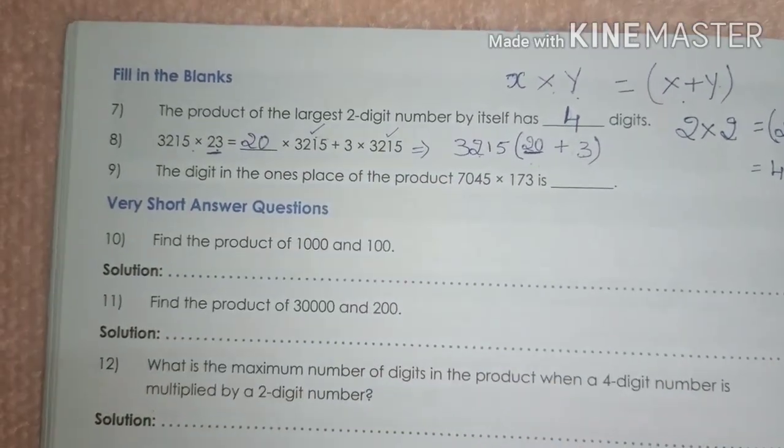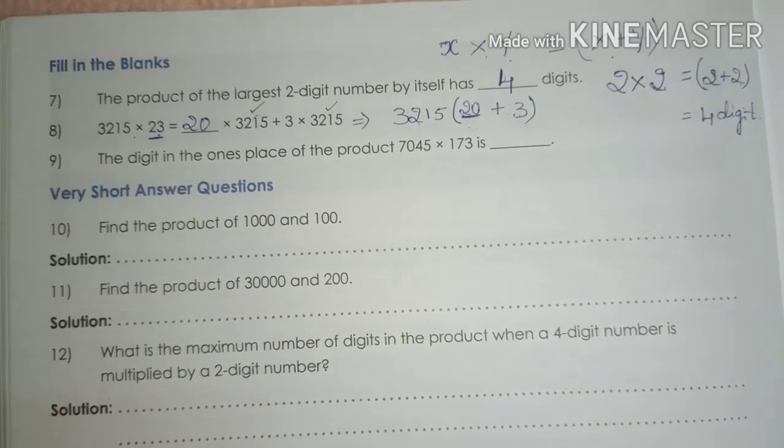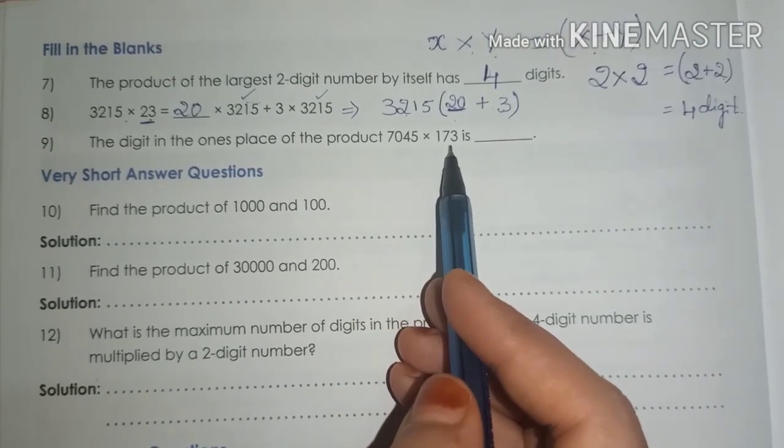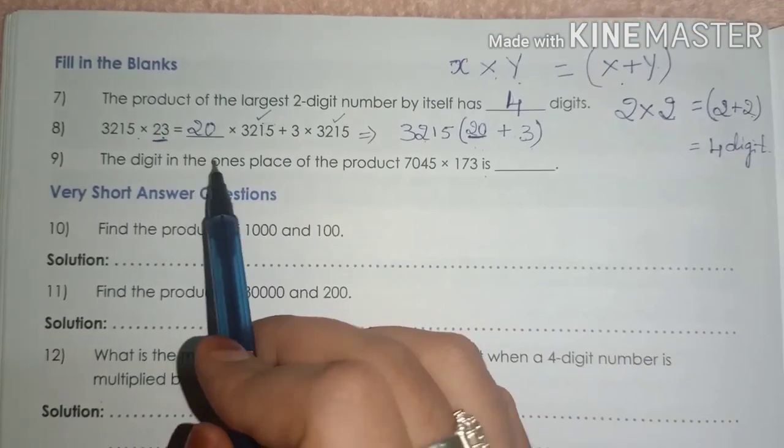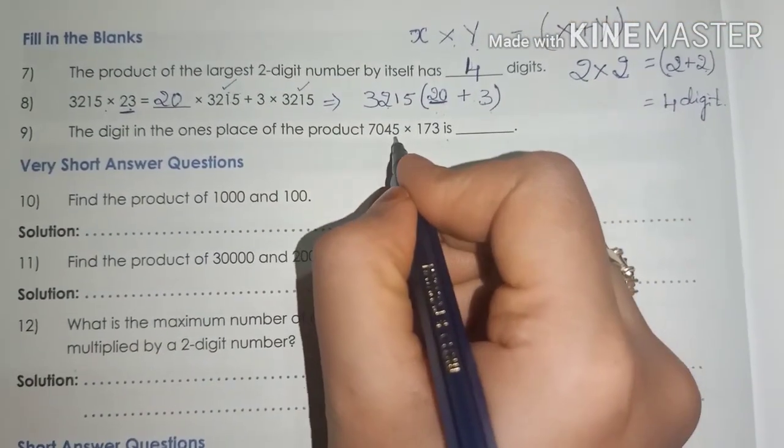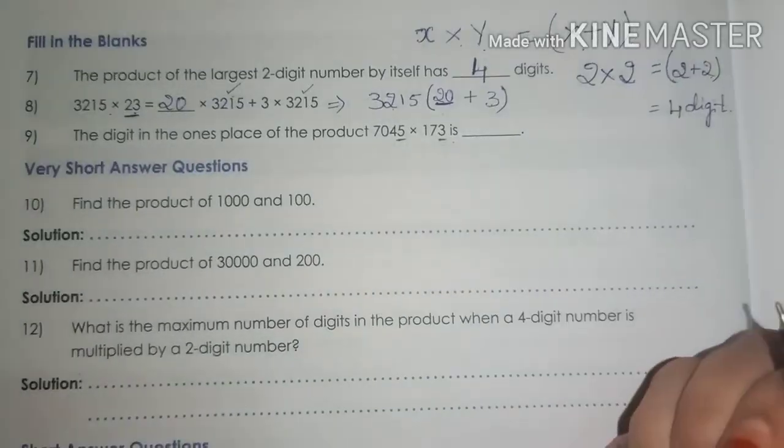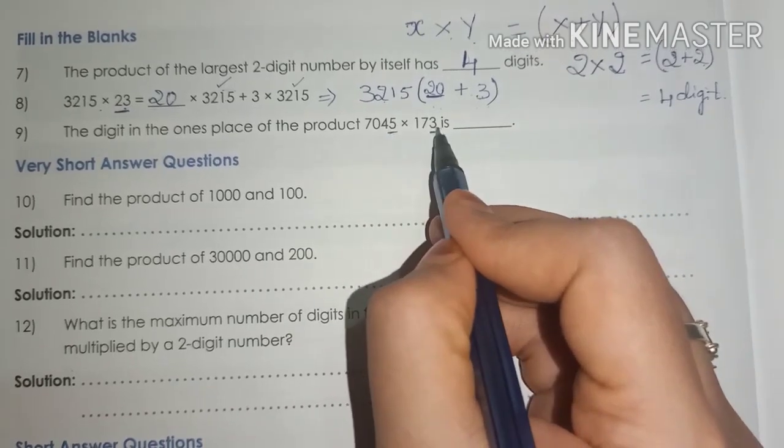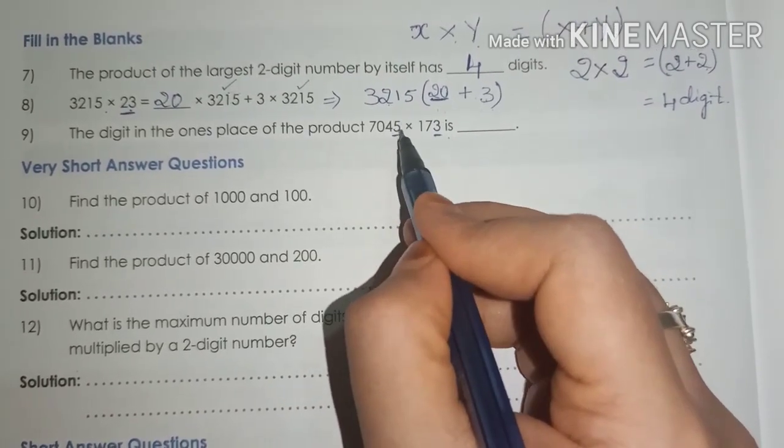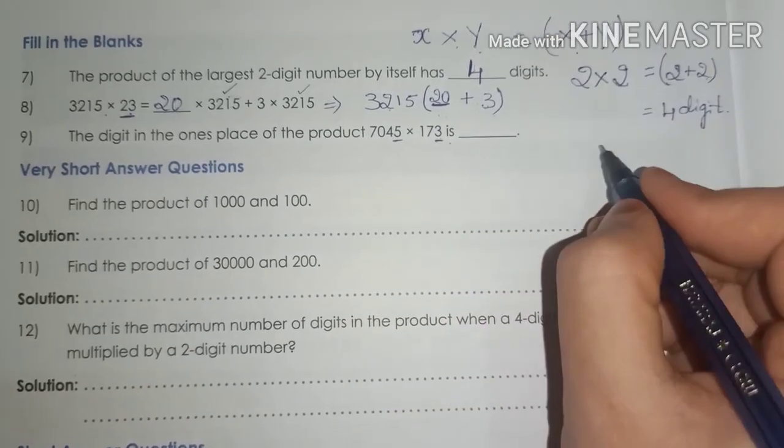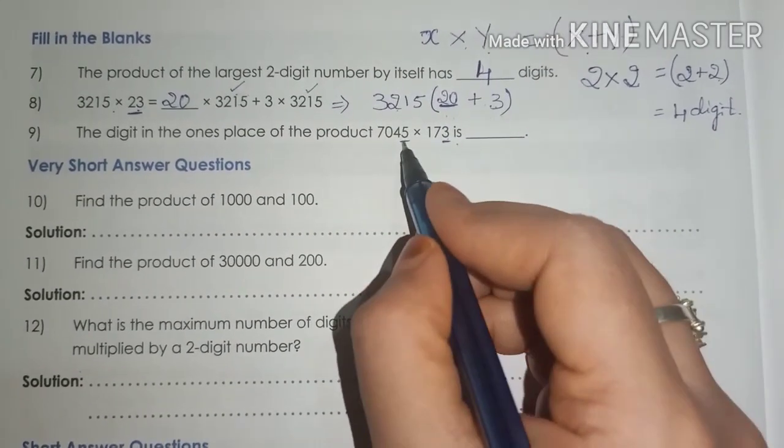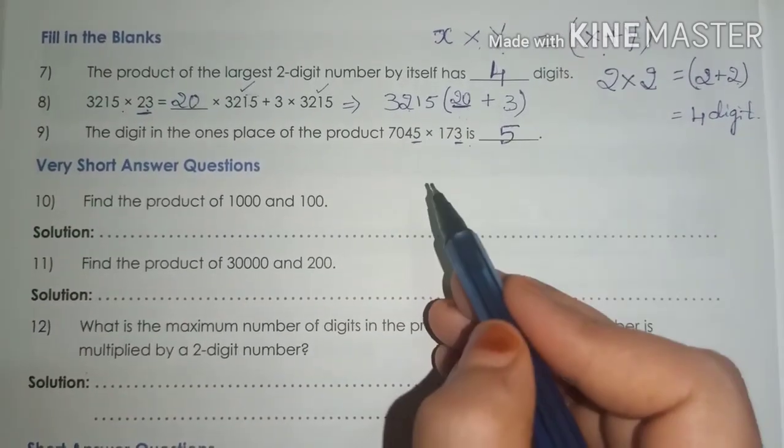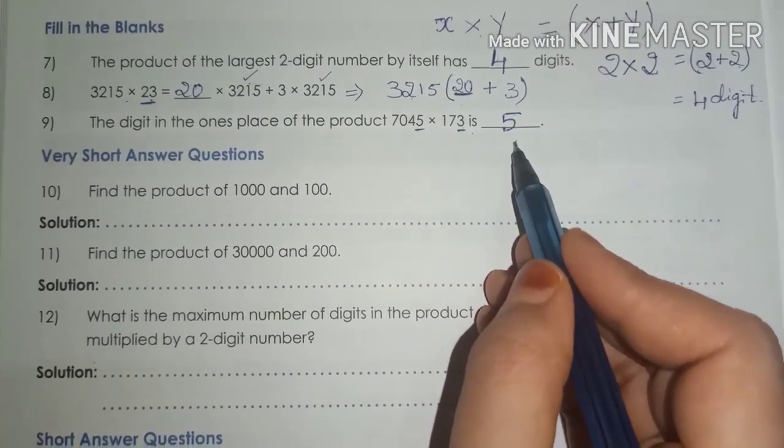Come to question number 9. The digit in the ones place of the product 7045 into 173 is. Here, they are asking the digit in the ones place. So, you can check it out by multiplying the ones digit numbers. No need to multiply all the numbers. Just multiply the numbers which are in the ones place. 5, 3, 15. In the 15, 5 will be the answer in the ones place and 1 will become carried to tens place. So, the right answer is 5.